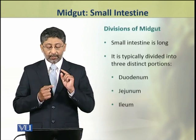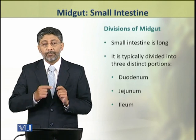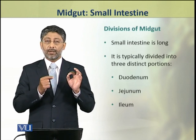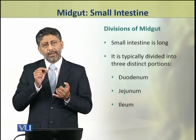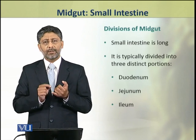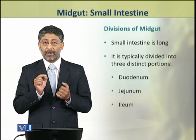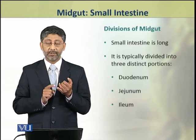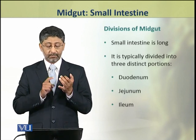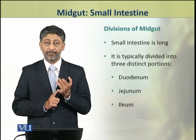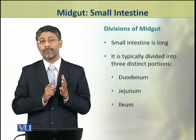The small intestine is a long portion of the alimentary canal. It is divided into three distinct parts: the first is called the duodenum, the second is the jejunum, and the third part is the ileum.